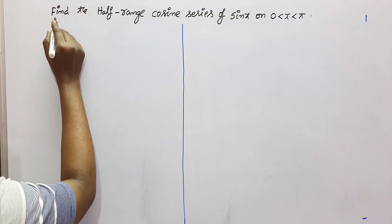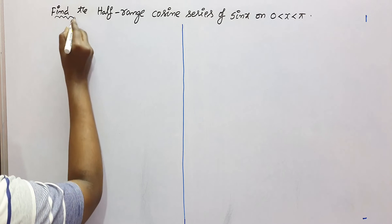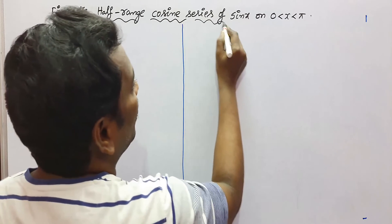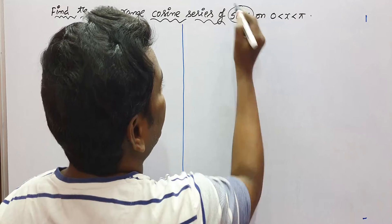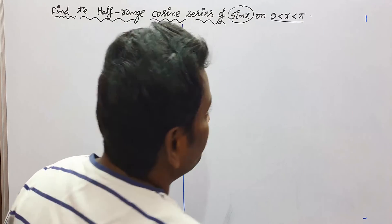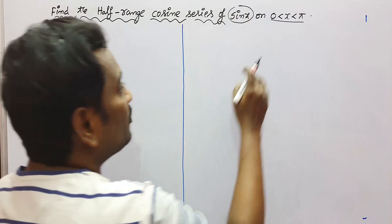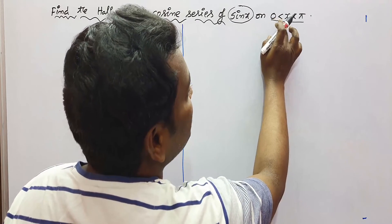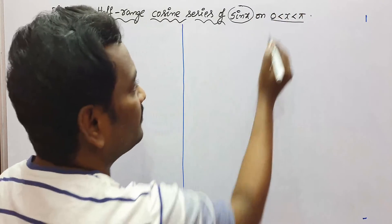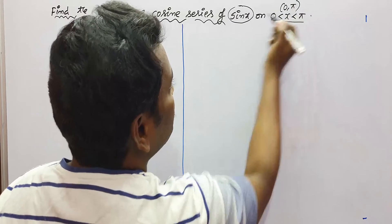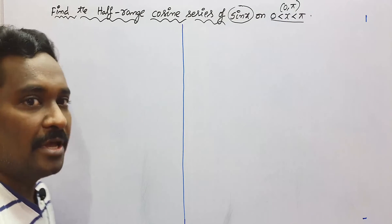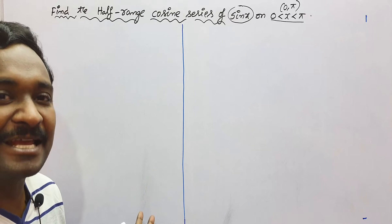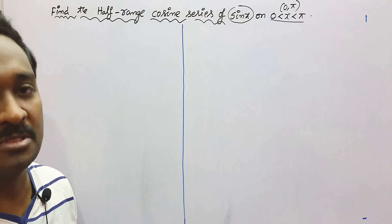This is another example on half-range cosine series. Find the half-range cosine series of the function sin(x) on the open interval (0, π), which is represented as 0 < x < π. In this problem, we have to express the sin function as a series of cosine terms.